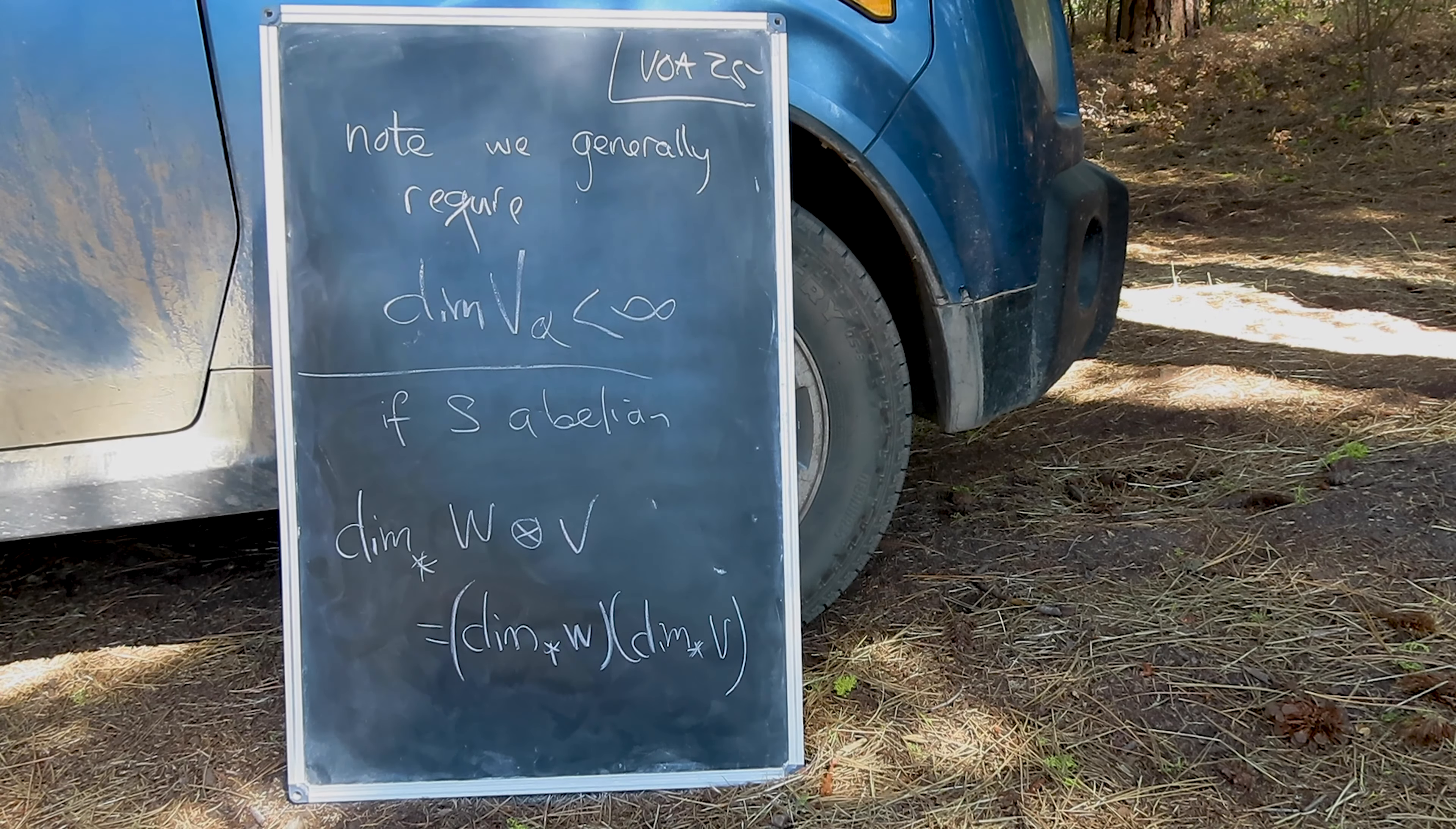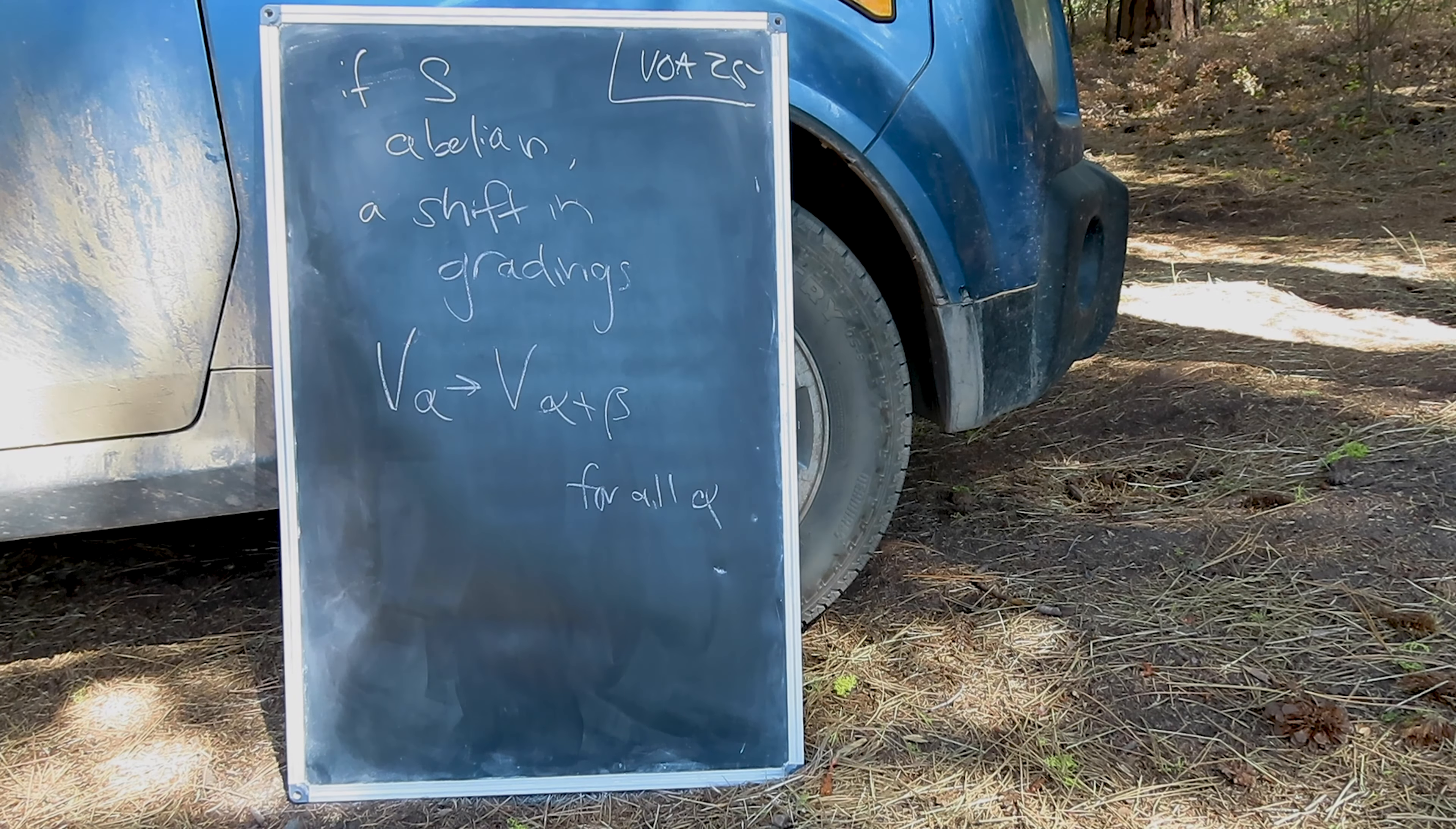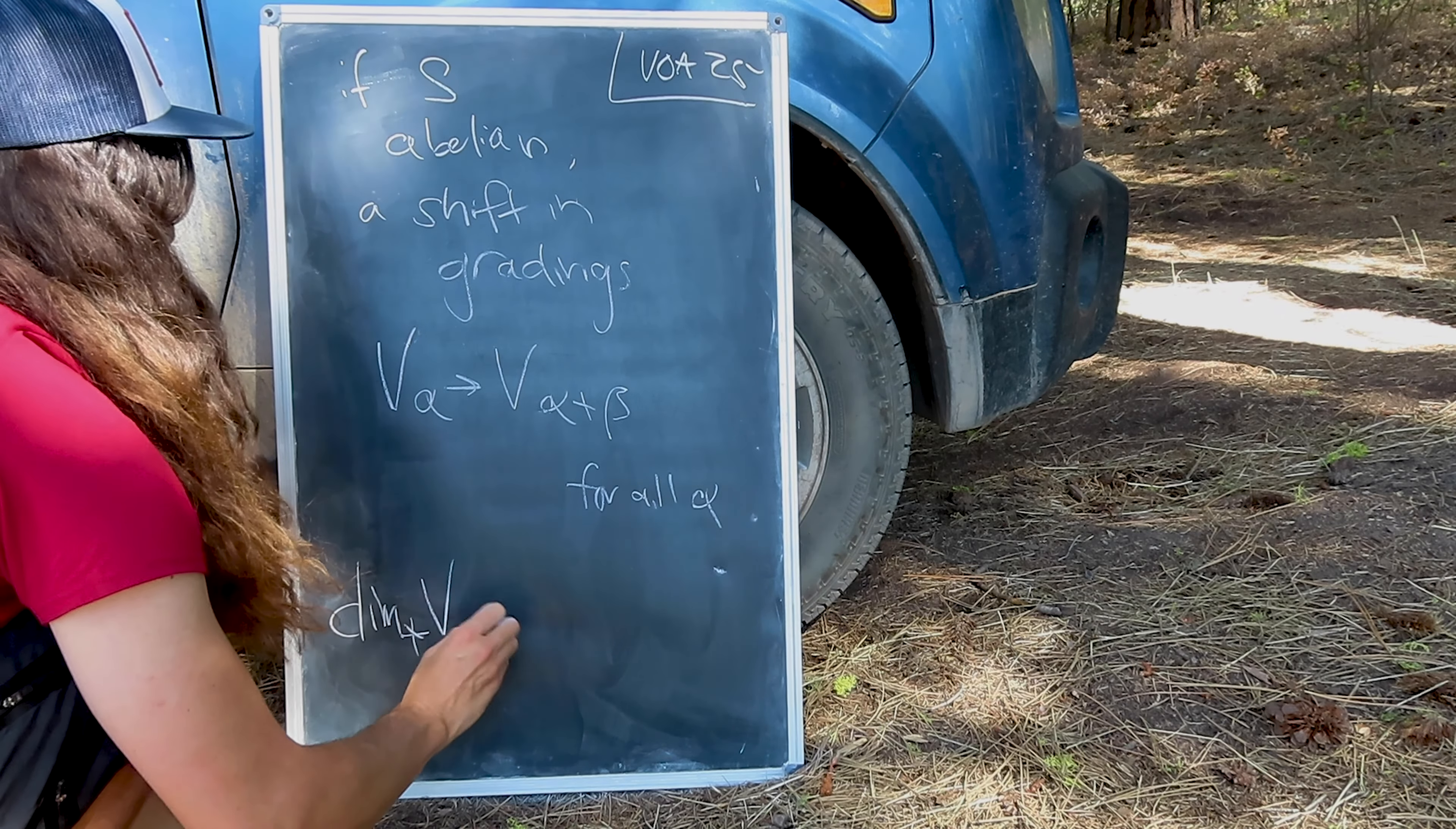If S is an abelian group, we can consider the tensor products of graded vector spaces, for which the formal sums also factorize. This sort of multiplication has a peculiar definition to ensure finiteness, where there are finitely many non-zero pairs A sub M and B sub N for each value of M plus N.